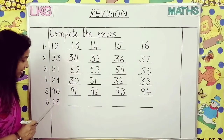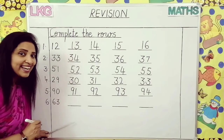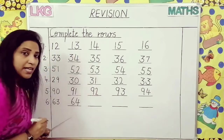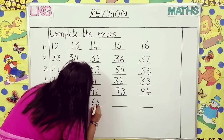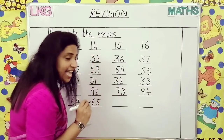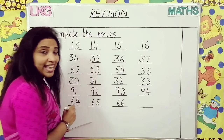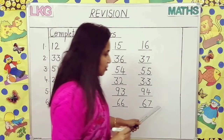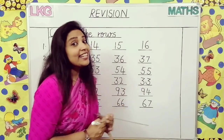Come to the last number. Which number is this? Sixty-three. What comes after sixty-three? Sixty-four. After sixty-four? Sixty-five. After sixty-five? Sixty-six. After sixty-six? Sixty-seven. There is no dash for this, so you don't have to write the next number. So this is called complete the rows.